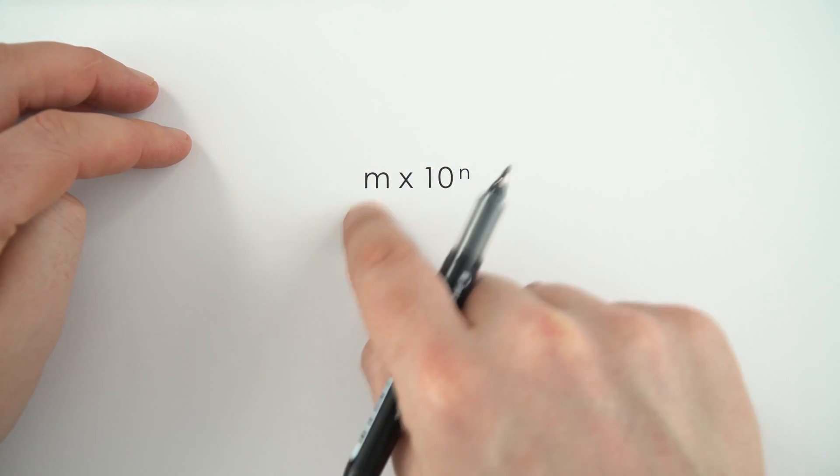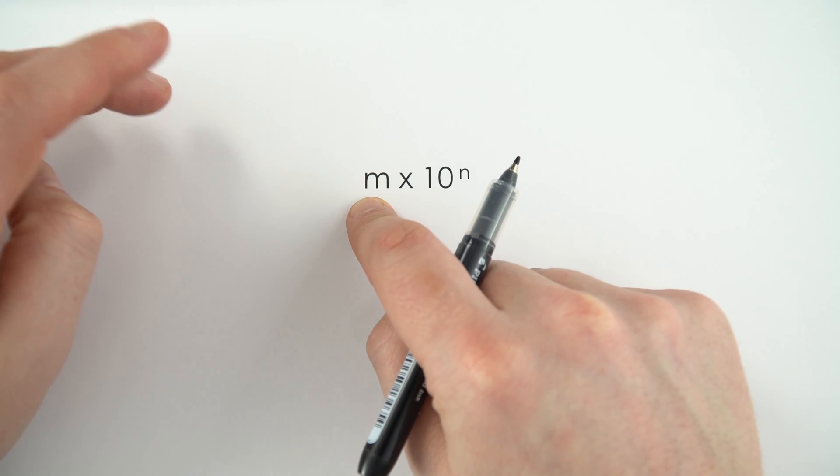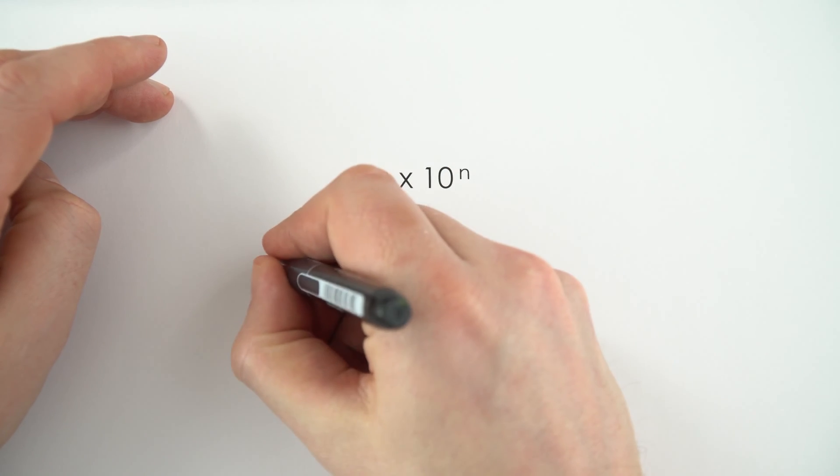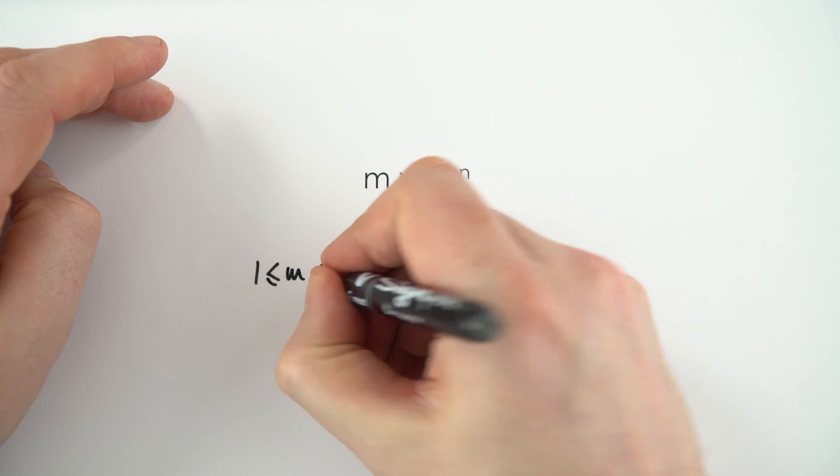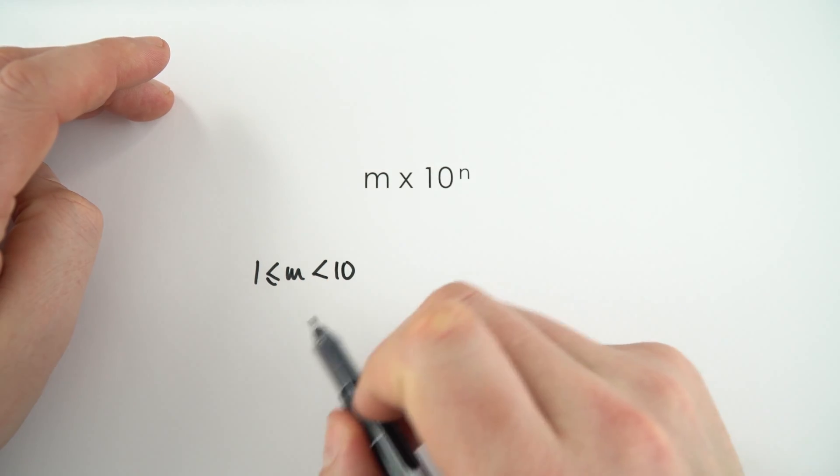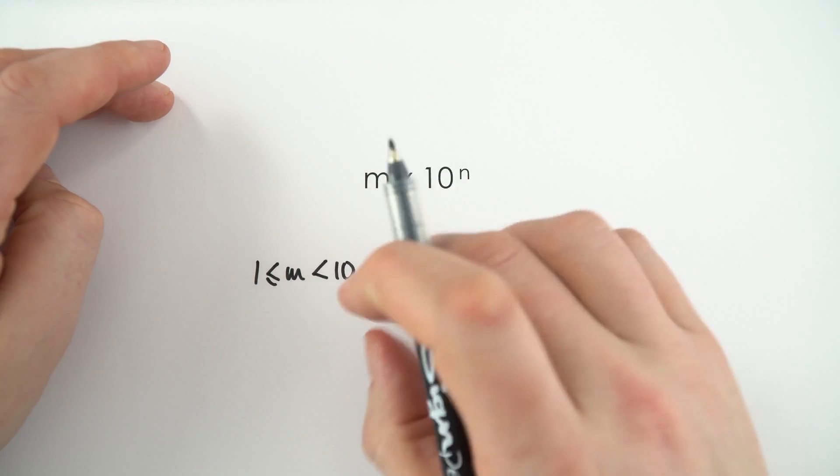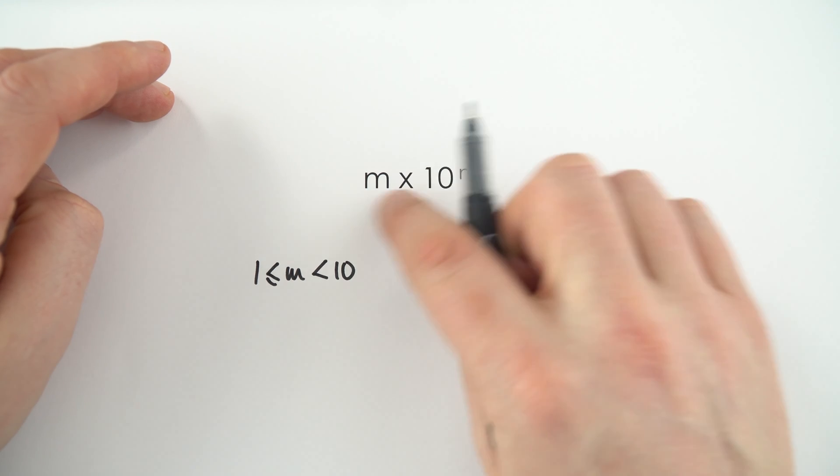Now the first number, which has just got the symbol m here, which stands for mantissa, this is a number which is bigger than or equal to 1, and it's smaller than 10. So basically 1.0 all the way up to 9.99999. So that's the first number.